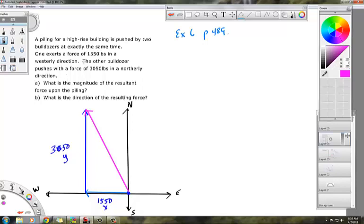So our two questions we have to know. We've got two bulldozers pushing a giant concrete pillar, one this way in the westerly direction, one this way almost twice as hard in the northerly direction. And it wants to know, what is the magnitude of the resultant force upon the piling? So these are in pounds.